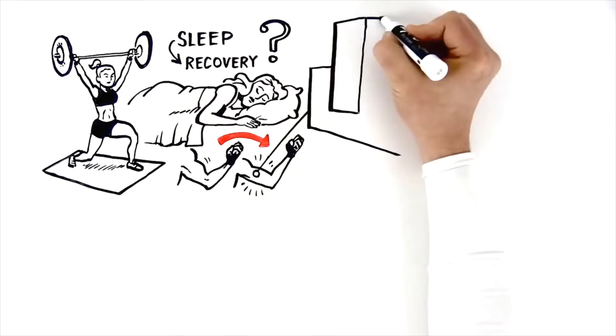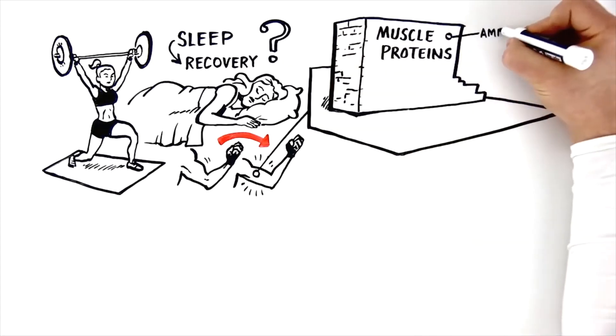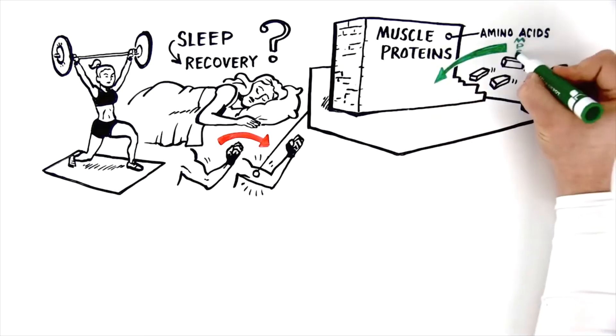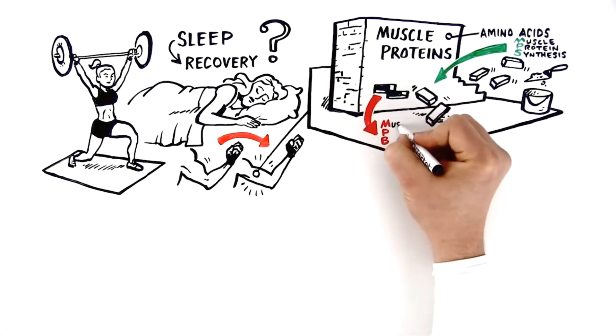Imagine that your muscle proteins are a brick wall. The bricks making up that wall are amino acids. These bricks are laid when we eat protein via a process called muscle protein synthesis. The bricks are taken out by the opposite process called muscle protein breakdown.